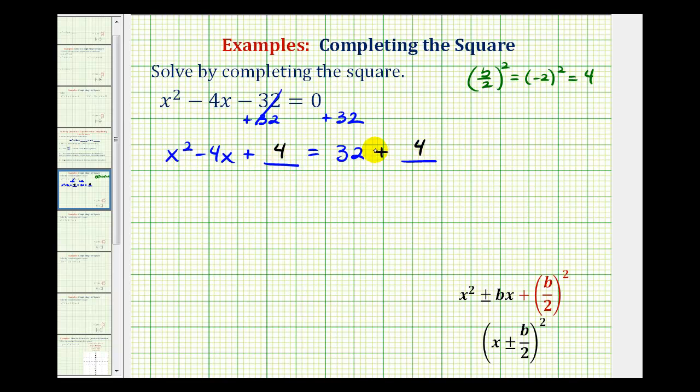And now we're going to factor the left and combine the terms on the right. This is going to be a perfect square trinomial, we'll start by factoring this into two binomial factors. Notice on the right we have 36.